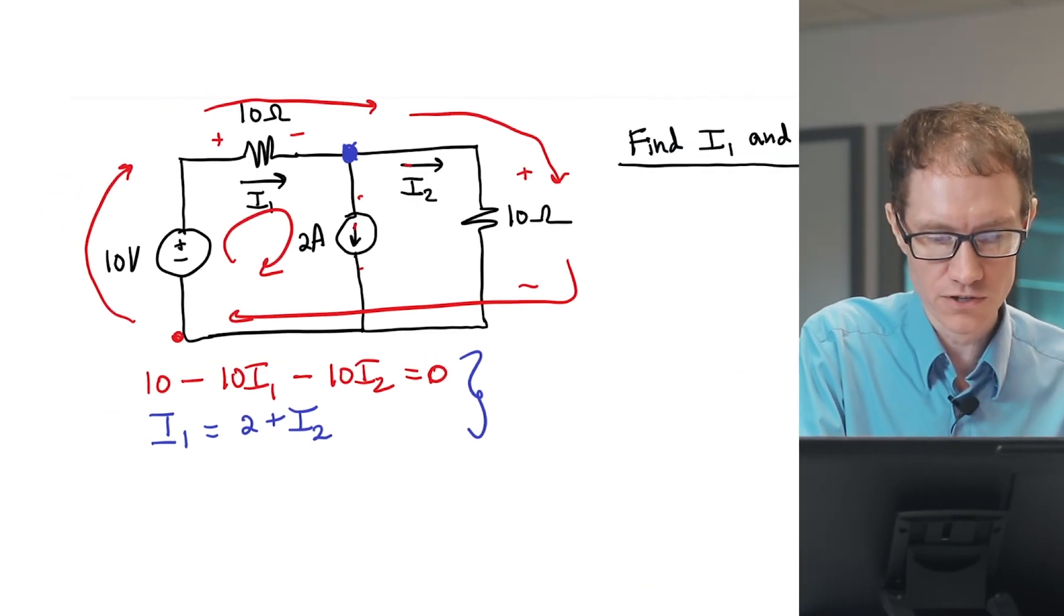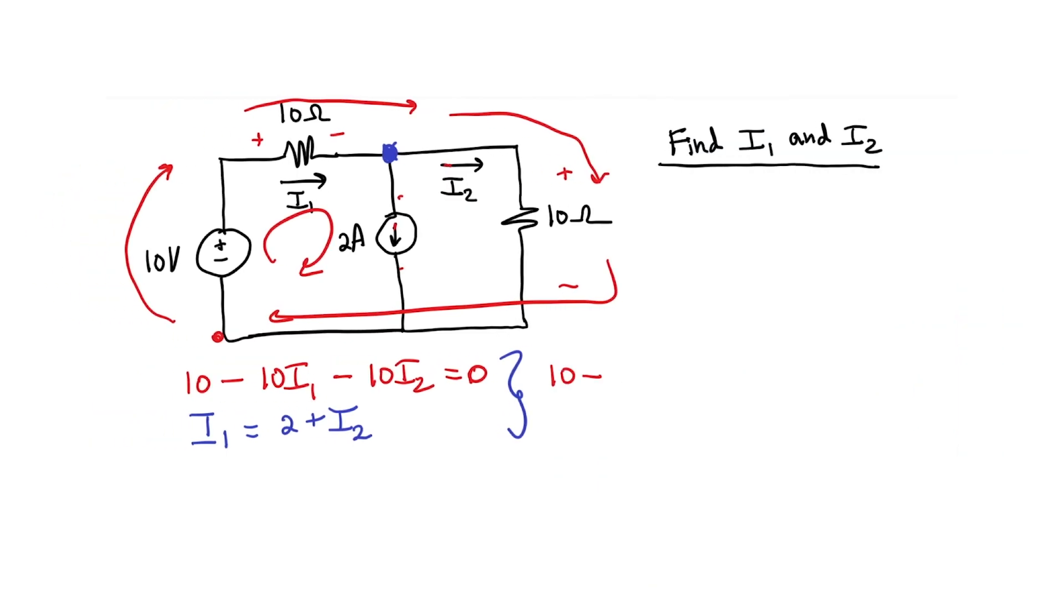Let's take the second equation and plug it into the first. So I have 10 minus 10, let's plug in I1, so this is 2 plus I2 minus 10 I2 equals 0. So we have 10 minus 20, which is minus 10, and then we have minus 20 I2 equals 0. And I2 is a negative number, it's just negative 0.5 ampere. Then I can plug this in to find I1 from here, which is 1.5 amperes. And we've finished the problem.